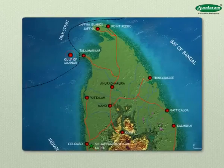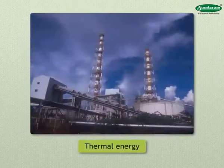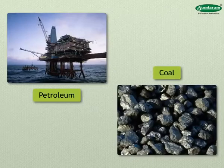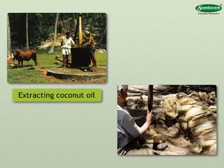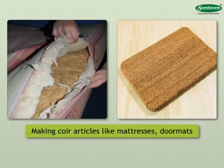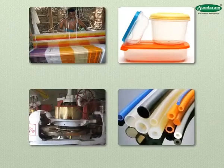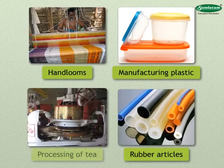Sri Lanka mainly uses thermal energy, generated by using petroleum and coal. A hydroelectric project has been started on the Galaoya River. There are traditional industries like extracting coconut oil, making coir and coir articles like mattresses, doormats, etc. There are also other industries like hand looms, manufacturing plastic and rubber articles, and processing of tea.